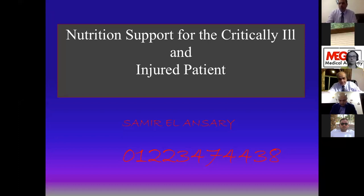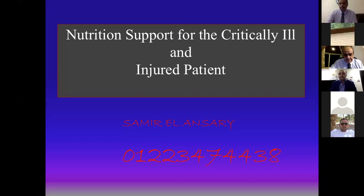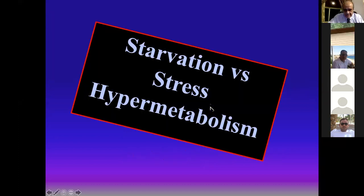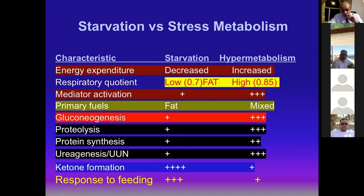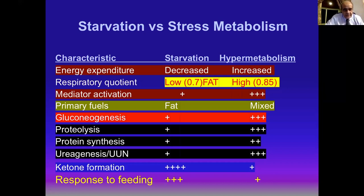Thank you. Good evening everyone. Today we will continue our nutritional support lecture series. I want to remind you of the difference between starvation and stress hypermetabolism. In starvation, energy expenditure is decreased to about 0.6–0.7, but in hypermetabolism it is increased to about 0.85, meaning the patient consumes all feeding ingredients — carbohydrates, protein, and fats.